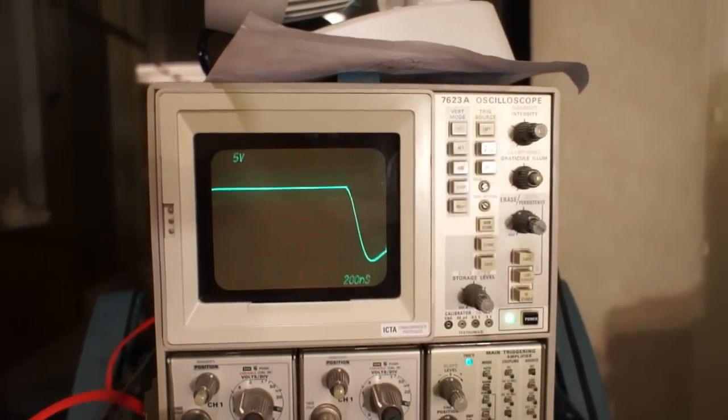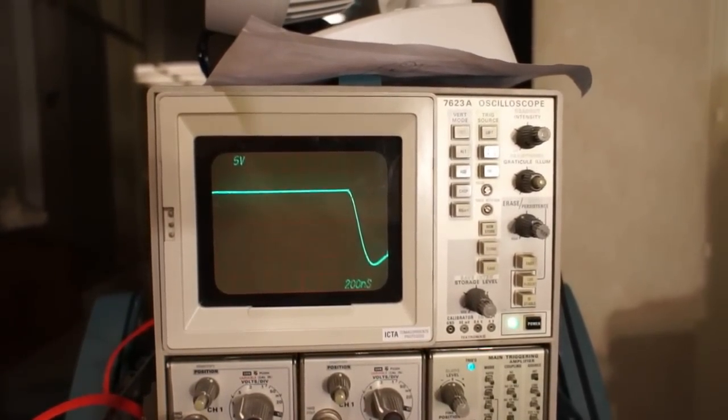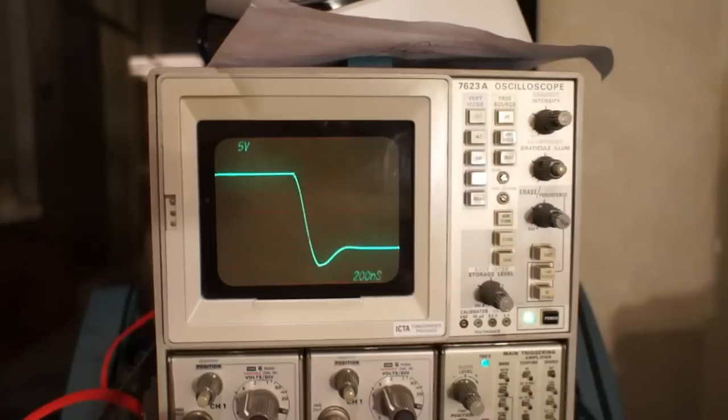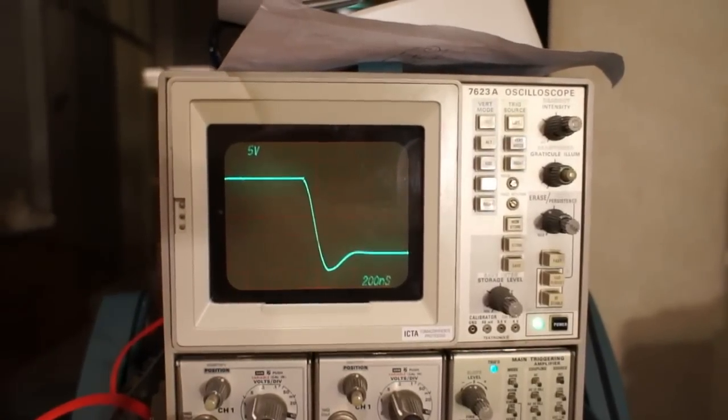As we go below 12 volts gate voltage the TVS diodes don't kick in, but you see the knees start to appear around 11 volt supply voltage so the overshoot is coming up to around 13 or 14.